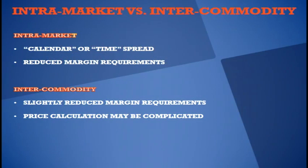A few notes on intermarket versus intercommodity. Intermarket spreads are the same commodity — corn/corn, wheat/wheat. They're also known as calendar or time spreads. These spreads have reduced margin requirements because you're in the same commodity; you're just long one, short the other.